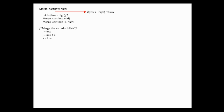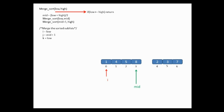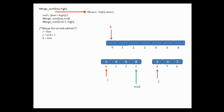Now we need to sort and merge the array. I have taken three variables: i, j, and k. i is equal to low, which is the starting index position (0). j is equal to mid plus one, which is 4 — the start of the second sublist. k is also equal to low. The variable k is used to add elements into array b, which holds the sorted elements. k starts pointing to the first index.